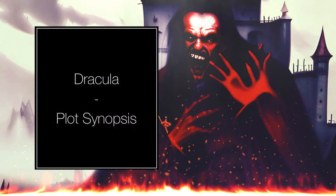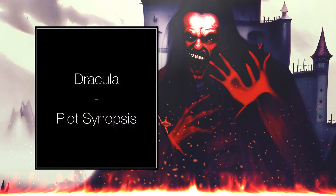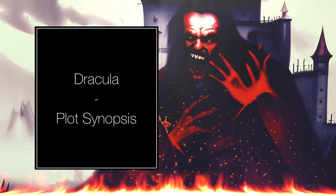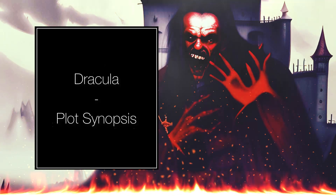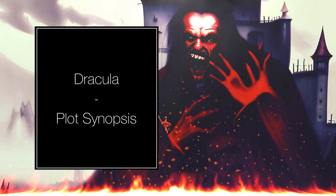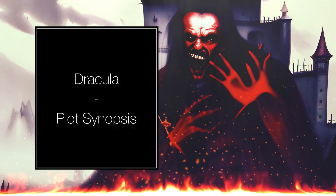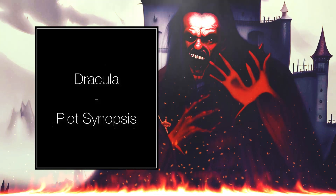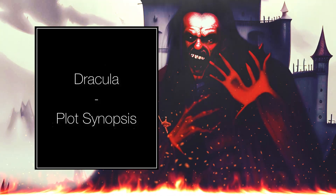Dracula by Bram Stoker: A Plot Synopsis. Dracula is a gothic horror novel written by Bram Stoker and published in 1897. The story follows the journey of young solicitor Jonathan Harker as he travels to Transylvania to finalize the sale of an English estate to the mysterious Count Dracula.